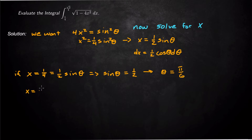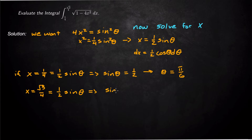Likewise, if x = √3/4, that equals ½sinθ, so sinθ = √3/2. What angle between 0 and π/2 gives √3/2 when you take the sine? That's going to be π/3.